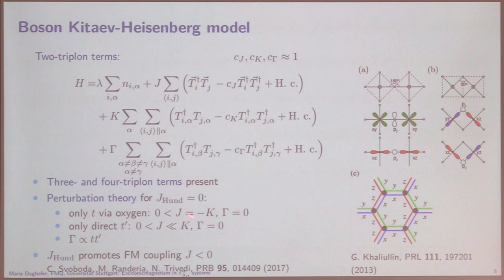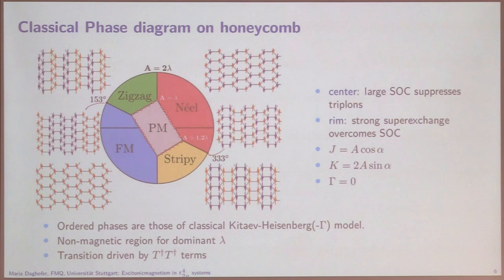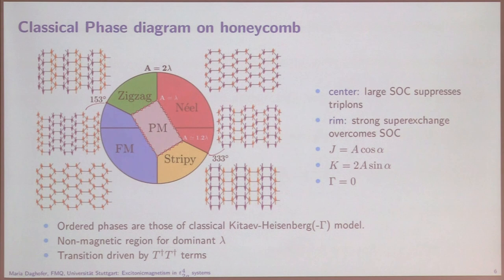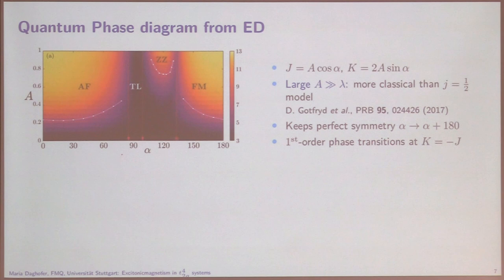The first thing we checked is the classical phase diagram. The center means very strong spin-orbit coupling, there are no triplons — this is a little paramagnet where the singlet dominates. Outside means superexchange is strong, so we have a triplon on every site and they order. We can map that to an effective classical model and did classical Monte Carlo. The results are boring, because they're exactly what one would get for the classical Kitaev-Heisenberg antiferromagnet. The only difference is we have a non-magnetic regime in the middle.